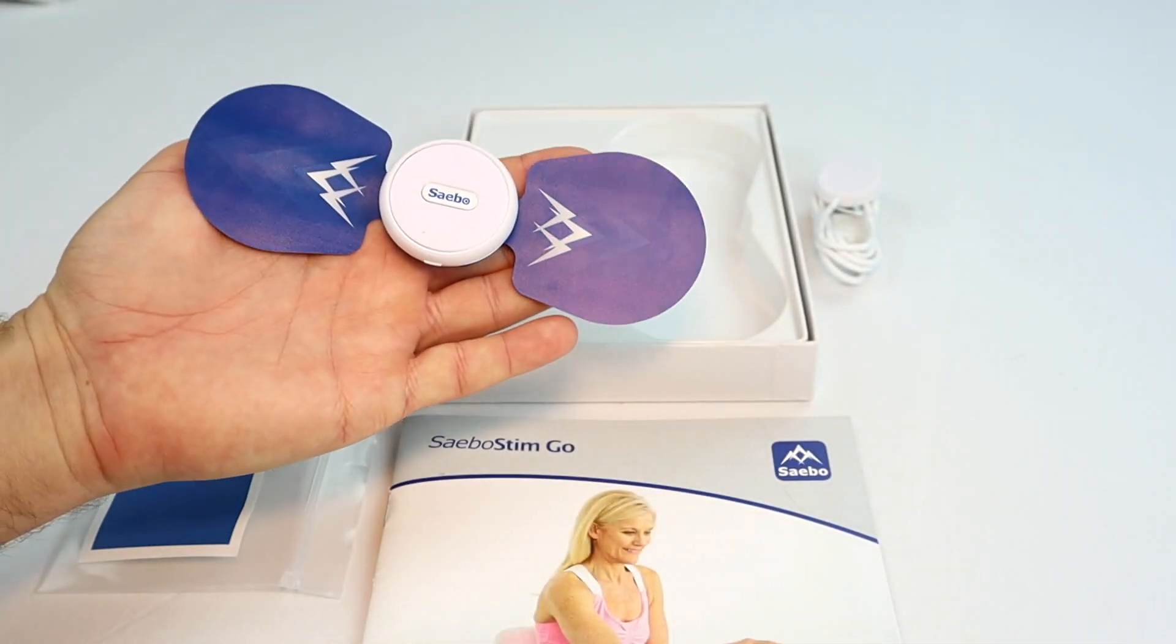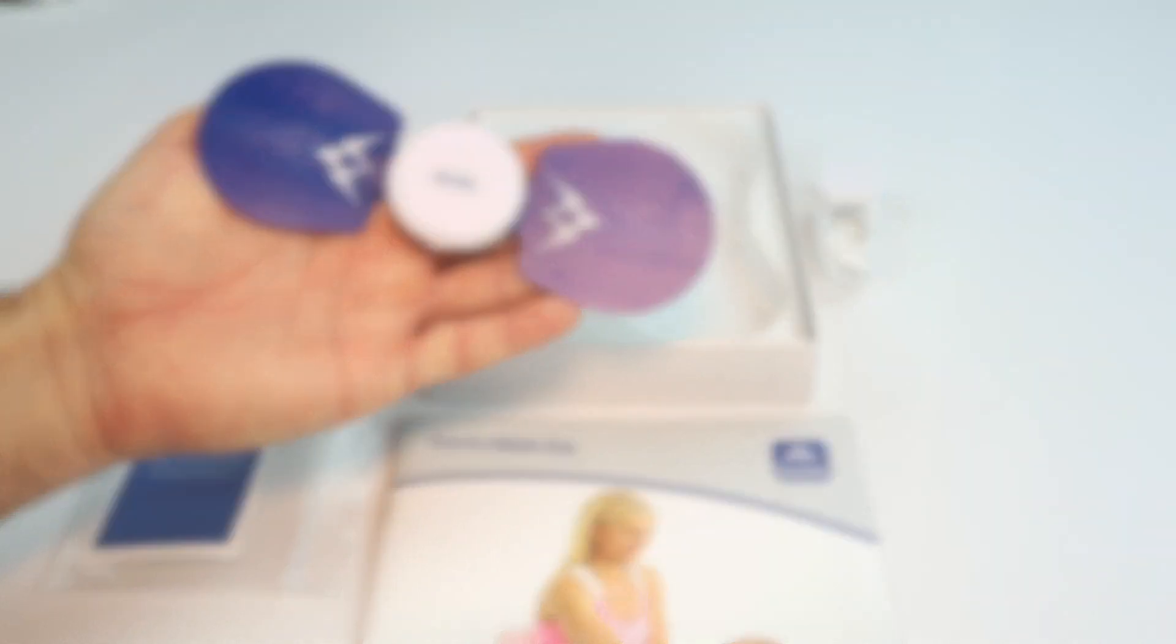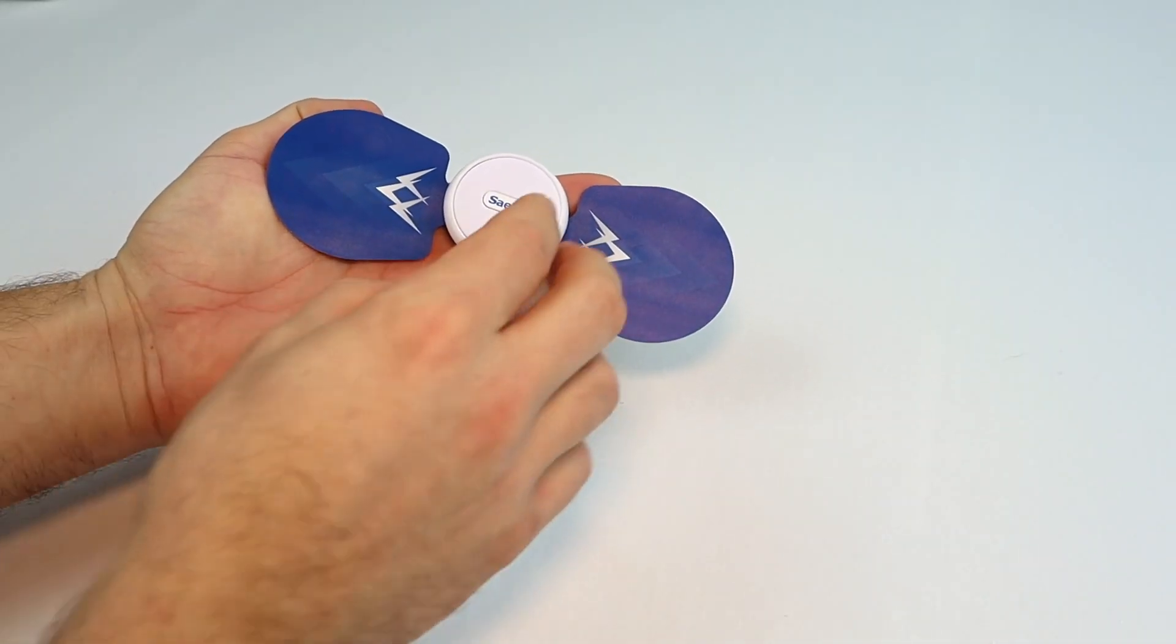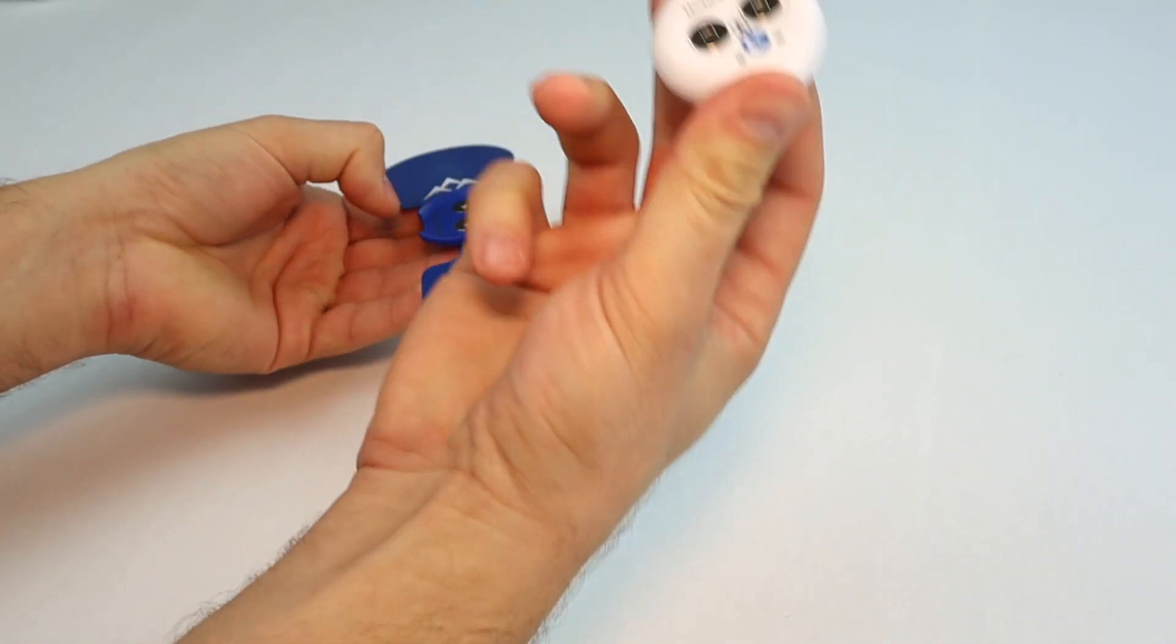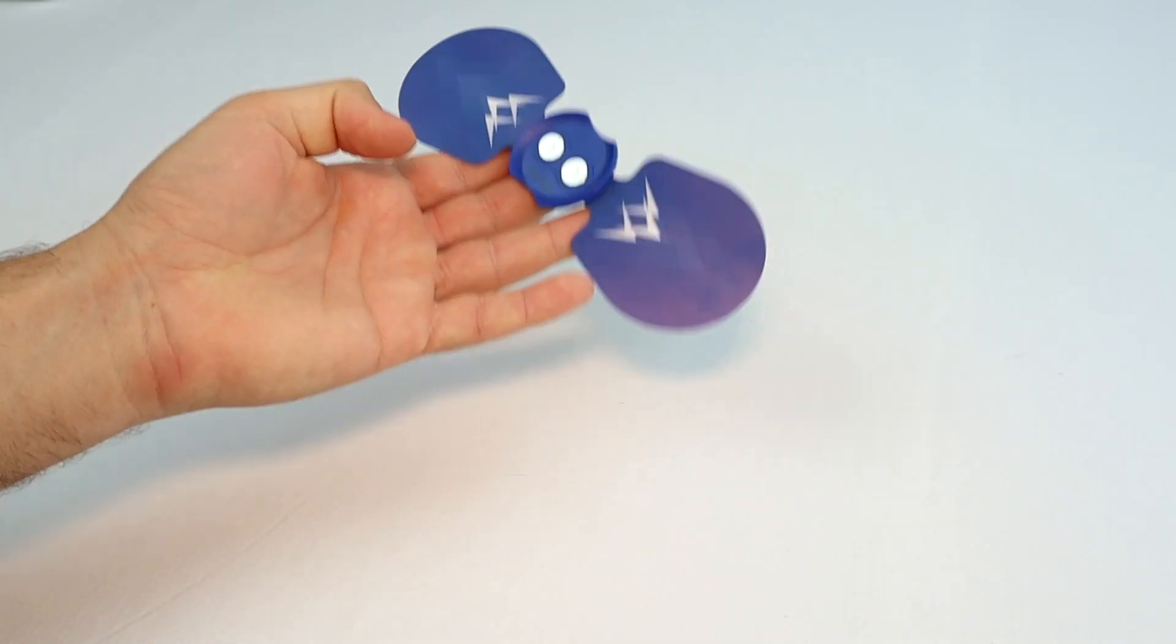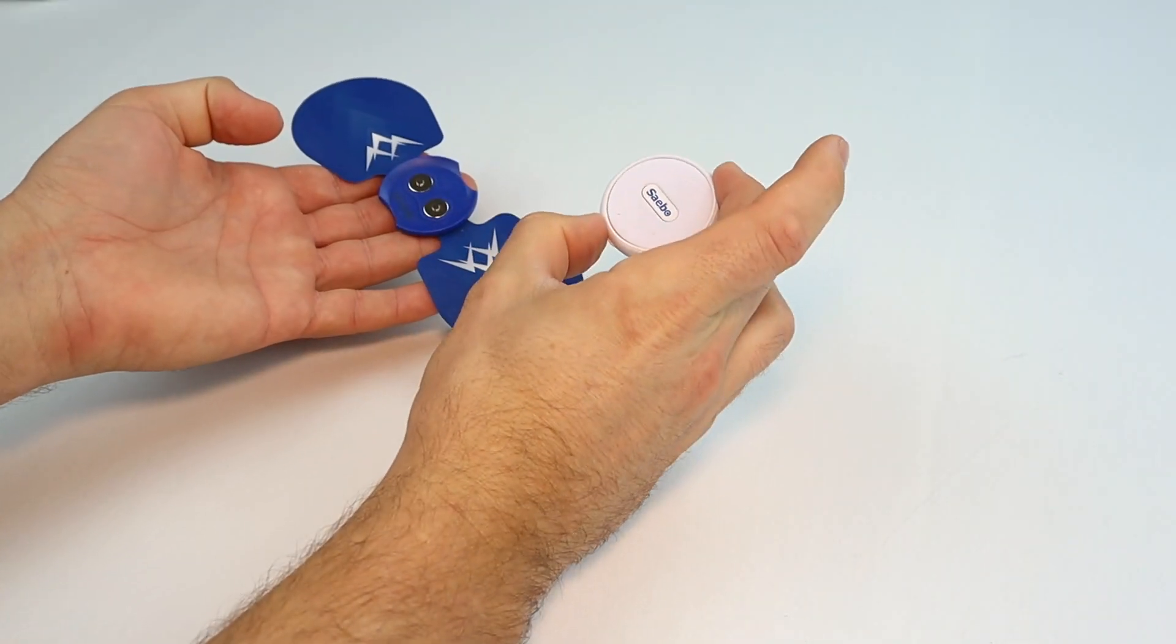And last but not least, this is the SableStim Go. The SableStim Go is made of two parts: the controller unit and the wings. The wings are replaceable, the controller unit is chargeable.